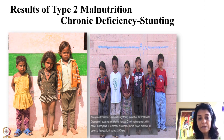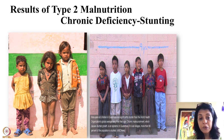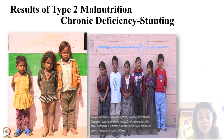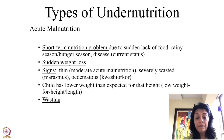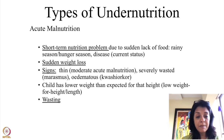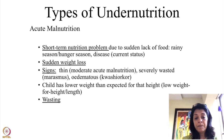Here you can see children of the same age with striking height differences. Similarly, a picture from Guatemala shows nine-year-olds who are all very short — they clearly have not received type 2 nutrients for a long time.